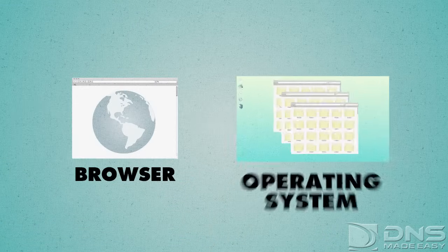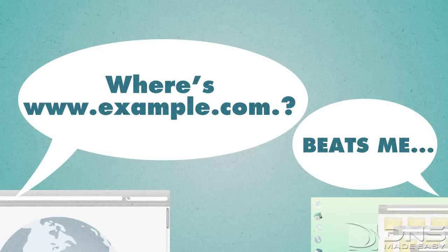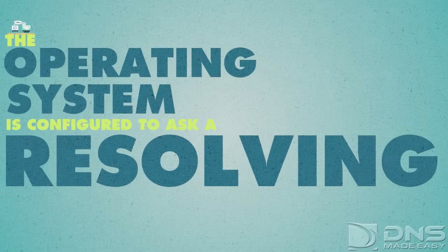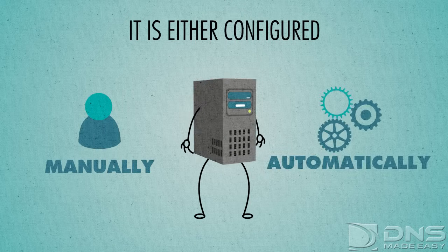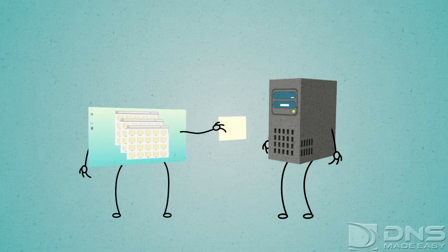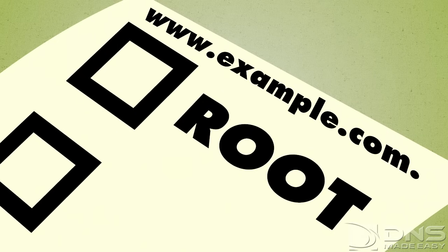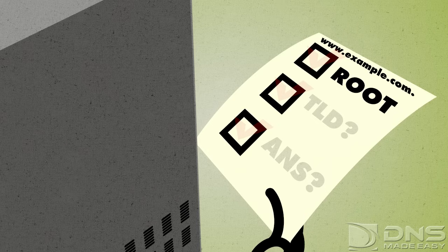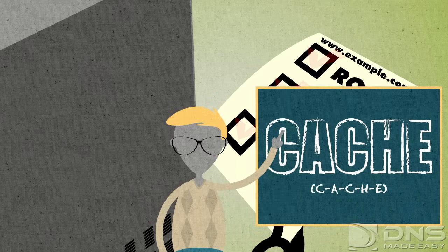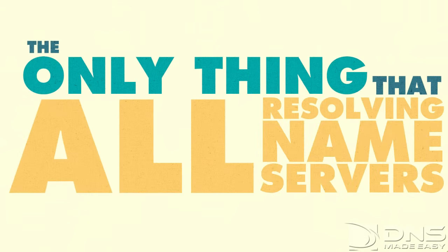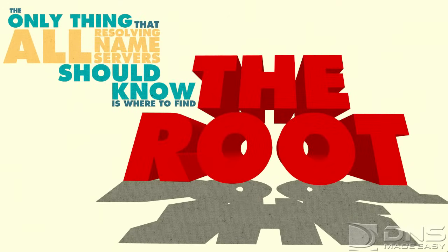So the browser asks the operating system, and they both don't know where www.example.com dot is. What happens next? The operating system is configured to ask a resolving name server for IP addresses it does not know. The resolving name server is the workhorse of the DNS lookup. It is either configured manually or automatically within your operating system. Your operating system asks or queries the resolving name server for www.example.com dot. The resolving name server may or may not have this in cache. For the sake of this demonstration, it does not.